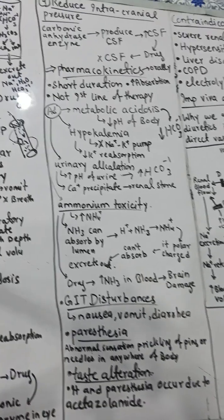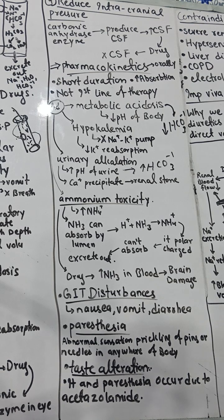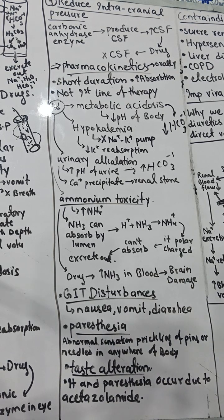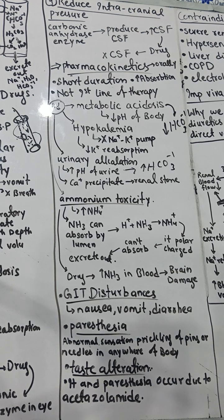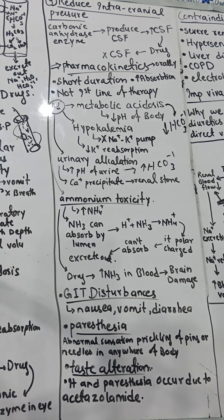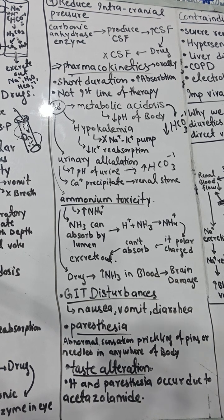Additional adverse effects include GI disturbances such as nausea, vomiting, and diarrhea. For acetazolamide specifically (given orally), adverse effects also include paresthesia — an abnormal sensation of pins and needles felt in the arms and legs due to nerve damage — and taste alteration, where the patient cannot properly enjoy the taste of food.